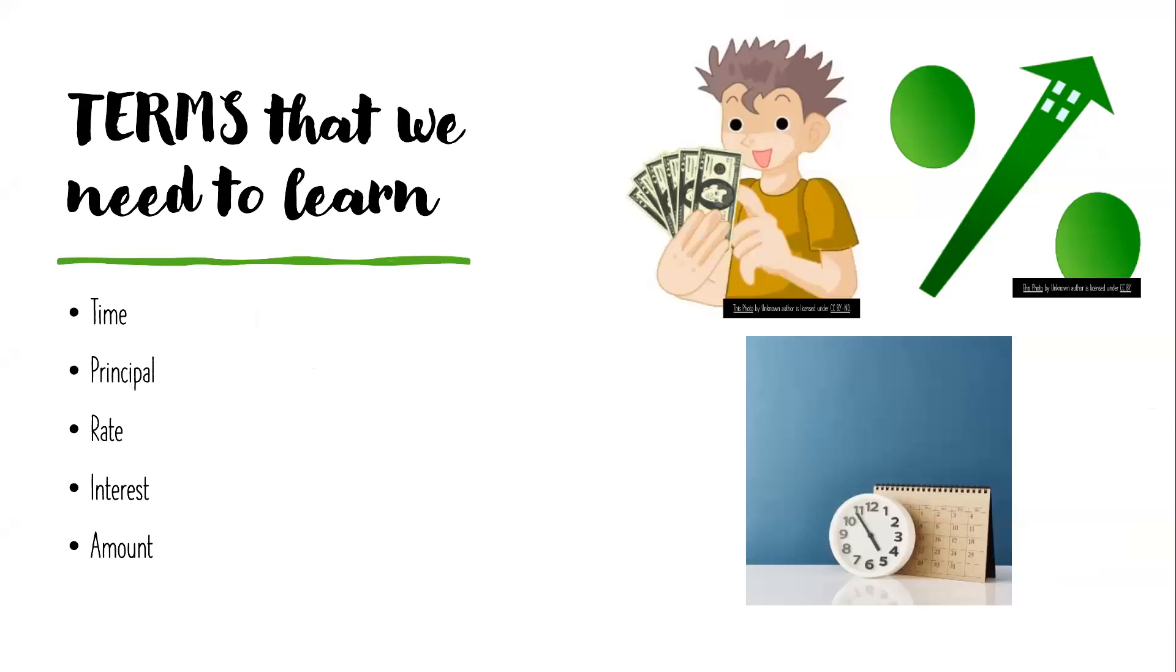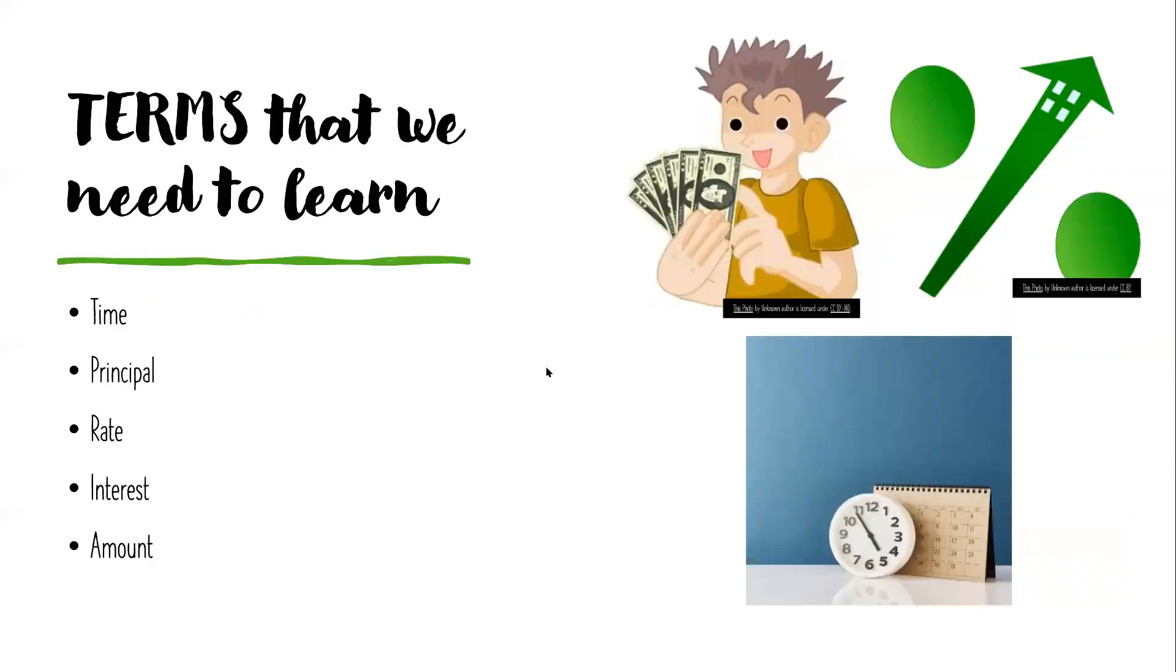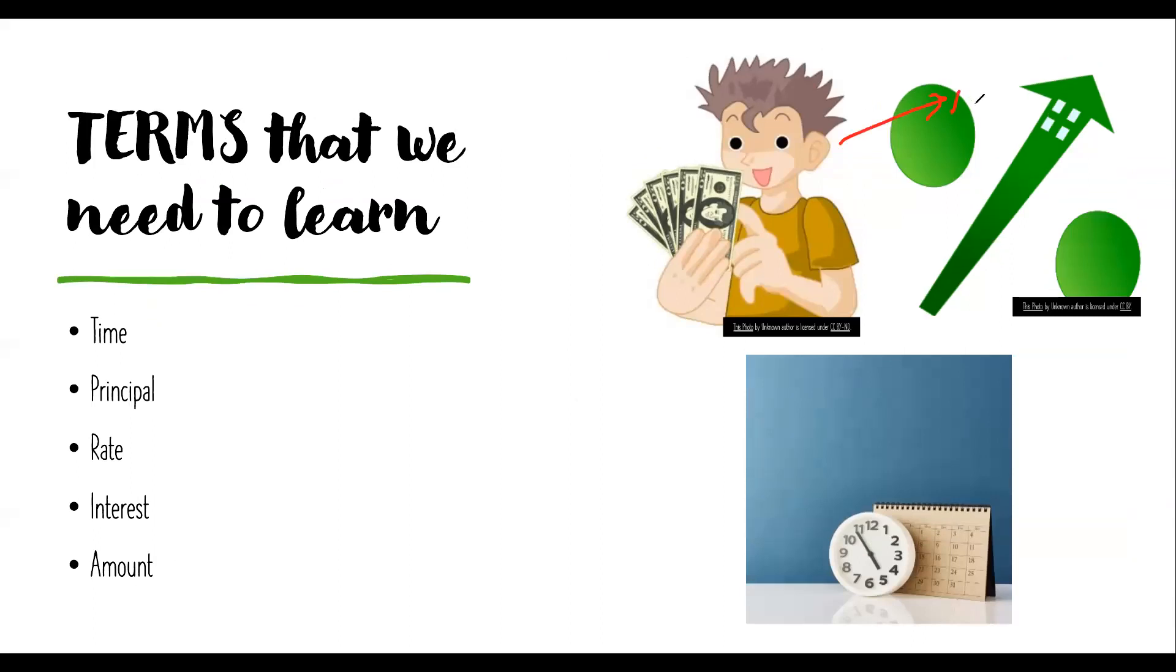For the concept of simple interest we need to know certain terms: time, principle, rate, interest and amount. I'll come to all of these words but before that I'll give you a scenario. This is the boy you're seeing, his name is Robin. Robin has certain money with him.